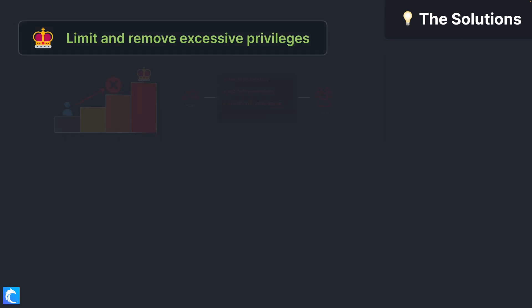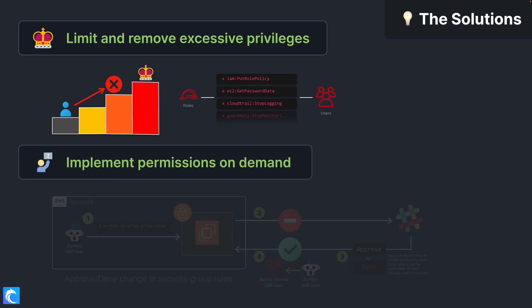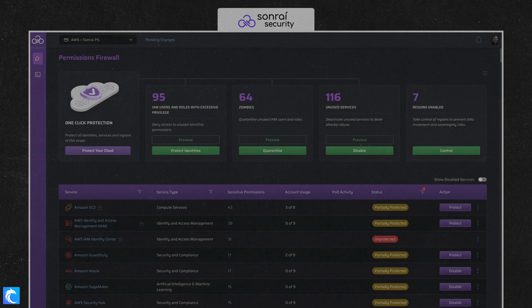Then limit and remove excessive privileges, and finally implement permissions on demand. Doing all this can be a ton of work and take a long time, but you can do it by piecing together different cloud-native or third-party tools — there are all kinds, from open source to closed source solutions.